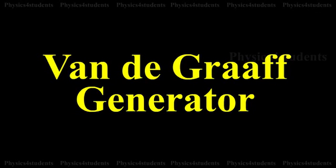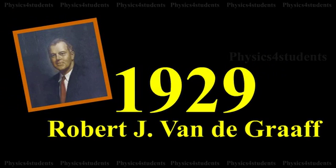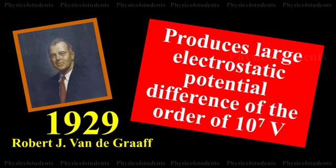Van de Graaff Generator. In 1929, Robert J. Van de Graaff designed an electrostatic machine which produces large electrostatic potential difference of the order of 10 raised to 7 volts.